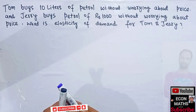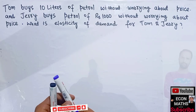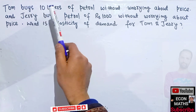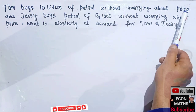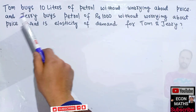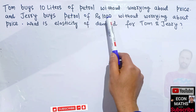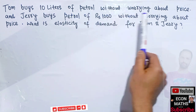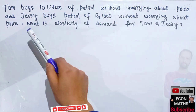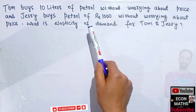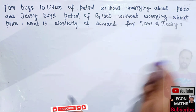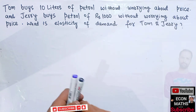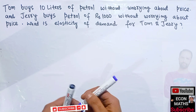A question from the GATE Economics paper of 2022 goes like this: Tom buys 10 liters of petrol without worrying about price, and Jerry buys petrol worth 1000 rupees without worrying about price. What is the elasticity of demand for Tom and Jerry? We need to find out the elasticity of demand for both.